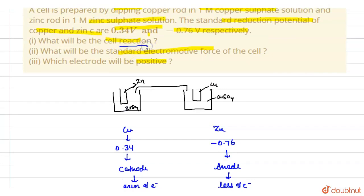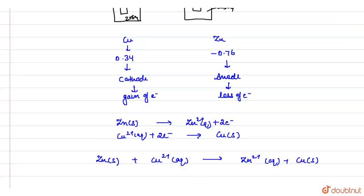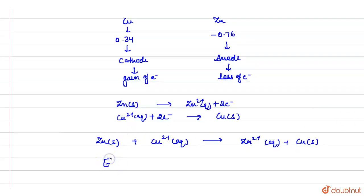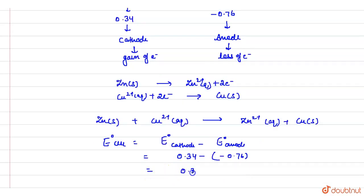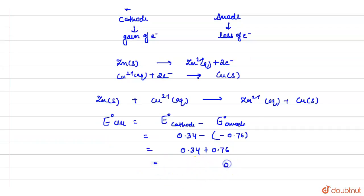Next is what is the standard electromotive force of the cell? That means we have to find out the EMF. E°cell is equal to E° of cathode minus E° of anode. E° of cathode is 0.34 and E° of anode is minus 0.76, so it is 0.34 plus 0.76, which comes out to be 1.10 volts. This is the E°cell.